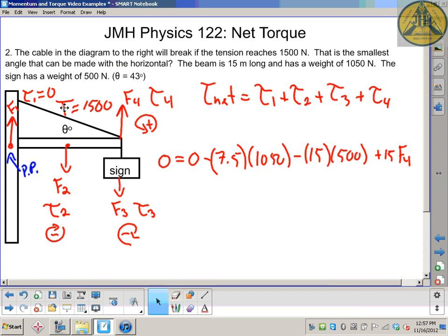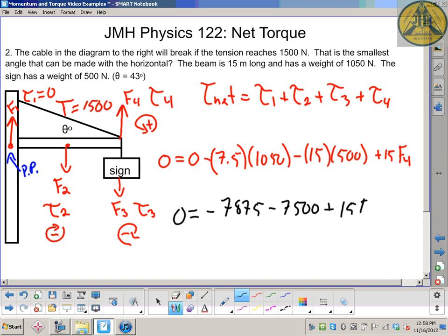Okay, switch colors now to make it a little clearer. So 0 equals negative 7.5 times 1050 is 7875, 15 times 500 is 7500, and plus 15 F4.